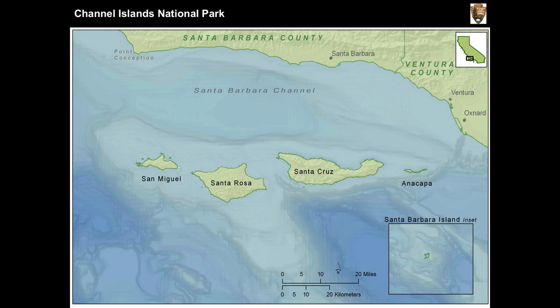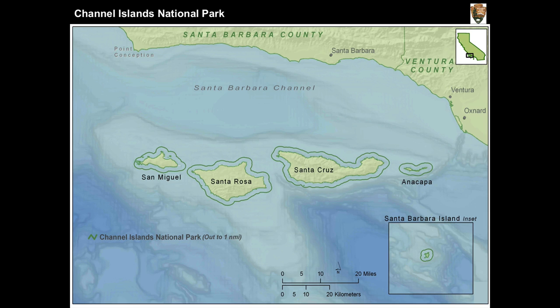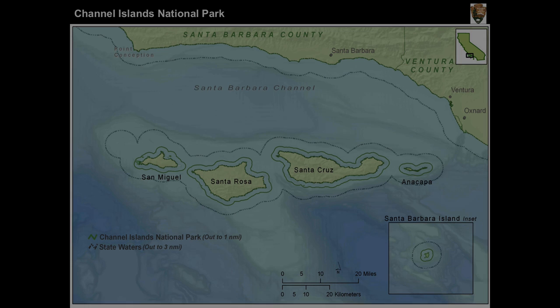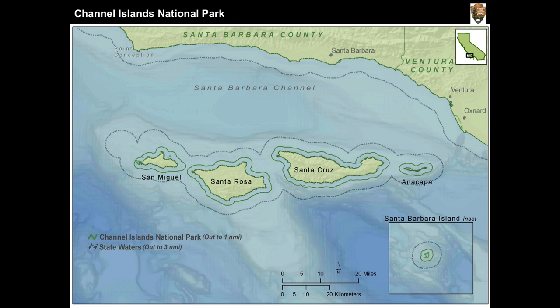Channel Island National Park was set up in 1980, and our marine control goes out one mile. When the Park Service was established, we tried to gain ownership of the living marine resources — all the kelp plants, all the fish from shore to one mile. The state of California owns the resources out to three miles and also around the islands. They told the Park Service no, took us to the Supreme Court, and we lost. The state owns and manages the resources. So the Park Service has no say in how we manage the living marine resources.